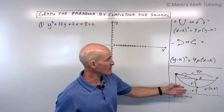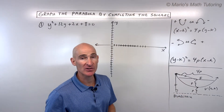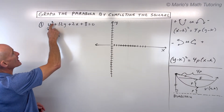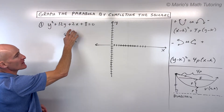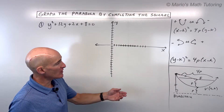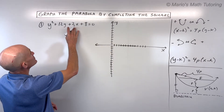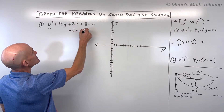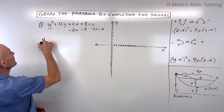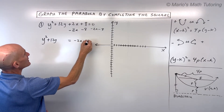We'll talk about how to identify the focus, the directrix, etc. Looking at the first equation, we notice this is a y² type — there's a y² but not an x². So we want to put it into the (y − k)² standard form. To do that, we get everything with a y on the left side and everything else on the right, subtracting 2x and 8 from both sides. That gives us y² + 12y = −2x − 8.